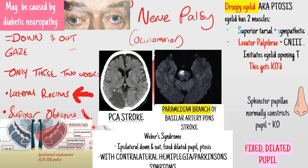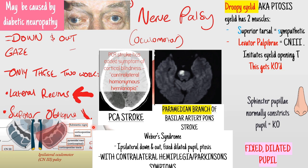So that's Weber's syndrome. An important thing to know with a PCA stroke is you're also going to get cortical blindness - specifically contralateral homonymous hemianopia with macular sparing. Whereas in a paramedian branch of the basilar artery stroke, you'll just get Weber's syndrome without the cortical blindness.